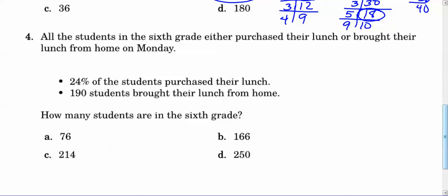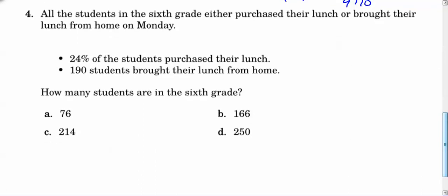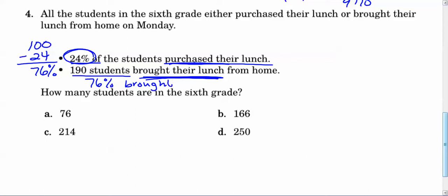It says 24% of the students purchased their lunch, and 190 students brought their lunch from home. How many students are in the 6th grade? You got to start with what you know. We know 24% purchased their lunch, but then they give us the number who brought their lunch. So we've got purchased and we got brought. Those two categories don't match. So what we're going to use is we know that 24% purchased their lunch. That means the other part out of 100% brought their lunch. If you take 100% and subtract 24%, you're going to get 76% that brought their lunch.